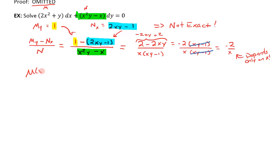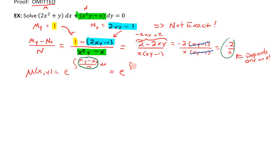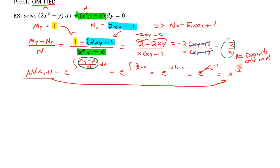So I'm going to use the integrating factor μ(x) equal to e to the integral of (M_y − N_x)/N dx, and that expression is −2/x. This becomes e to the integral of −2/x dx, which equals e to the −2 ln(x), which is e to the ln(x⁻²), which simplifies to x⁻². So my integrating factor μ is x⁻².